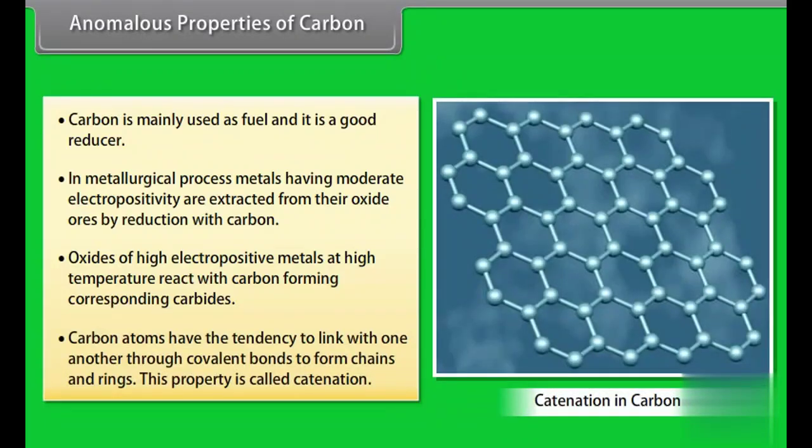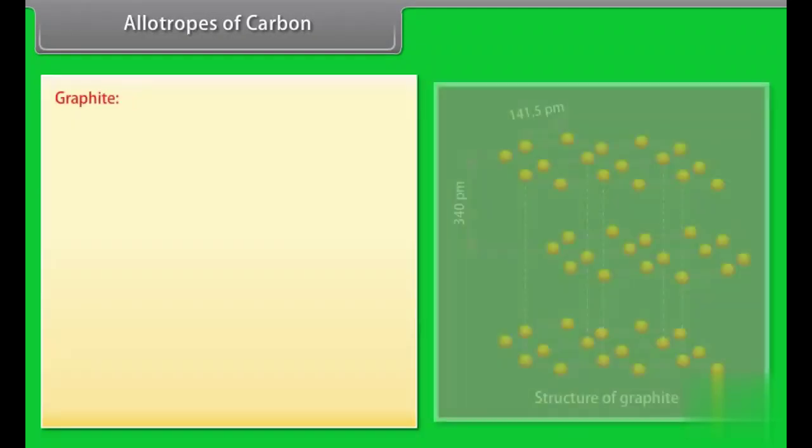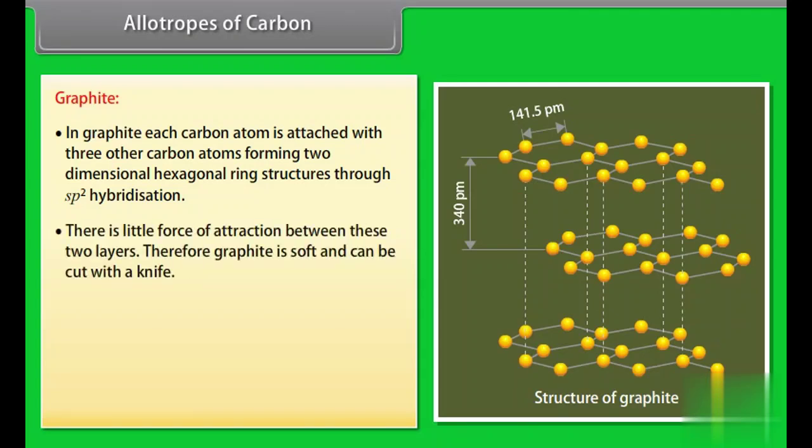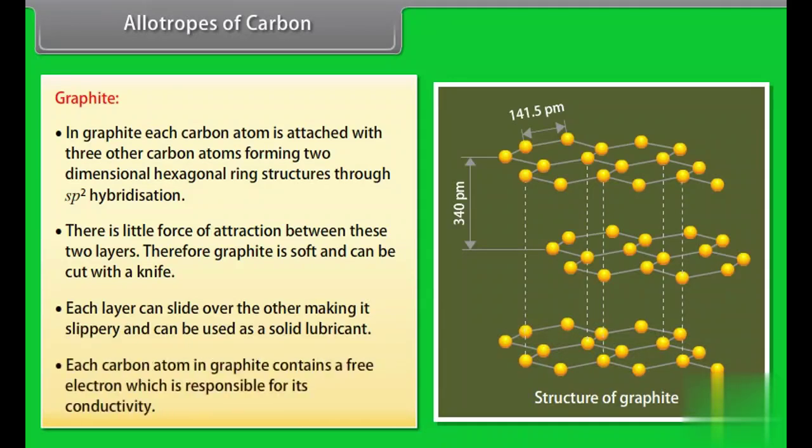Allotropes of carbon. Graphite. In graphite, each carbon atom is attached with three other carbon atoms forming two-dimensional hexagonal ring structures through sp2 hybridization. There is little force of attraction between these two layers. Therefore, graphite is soft and can be cut with a knife. Each layer can slide over the other making it slippery and can be used as solid lubricant. Each carbon atom in graphite contains a free electron which is responsible for its conductivity.